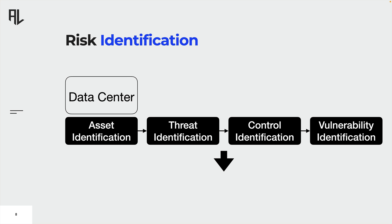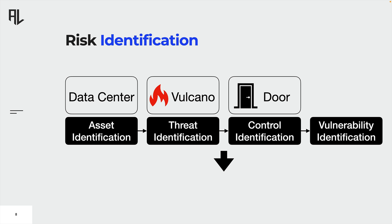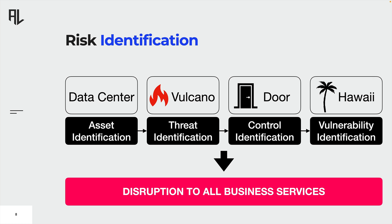What about possible threats? Since Hawaii is located on an island with volcanic activity, it's safe to say that a volcanic eruption is a significant threat. But what about existing controls? Controls are measures that modify risks. For instance, a front door is a physical control that protects the data center from intruders, thereby safeguarding confidentiality, availability, and integrity. However, a door cannot protect you from a volcano. Such a risk would of course lead to a disruption to all business services, which is why it is a very critical risk that needs to be treated.